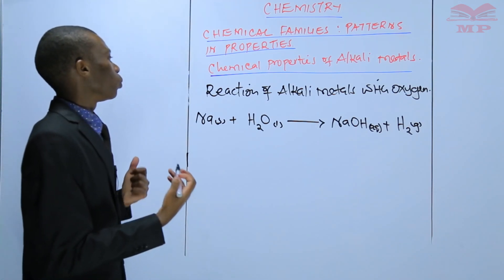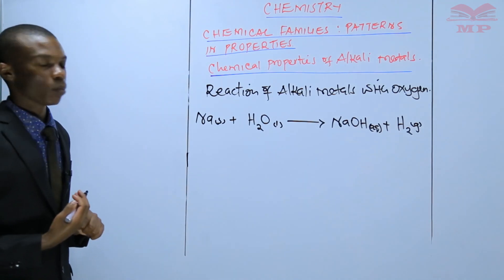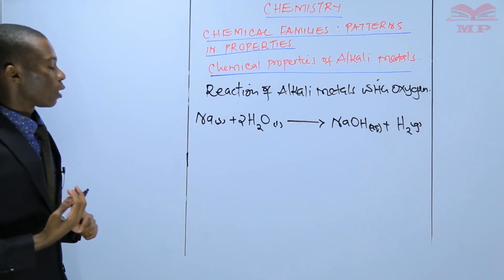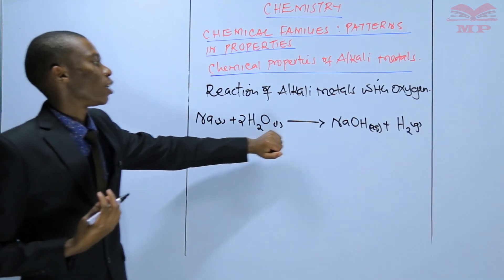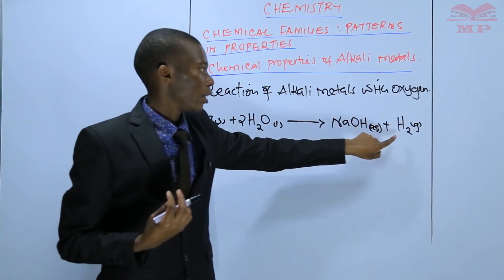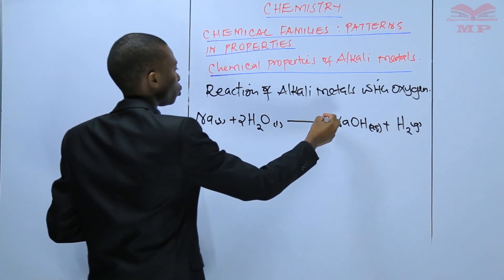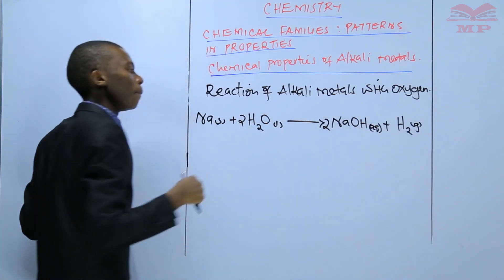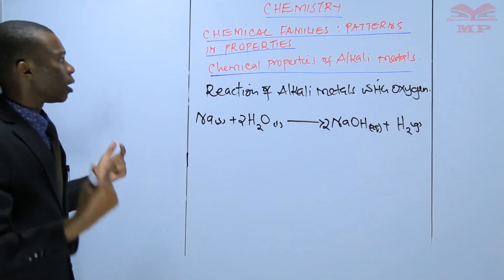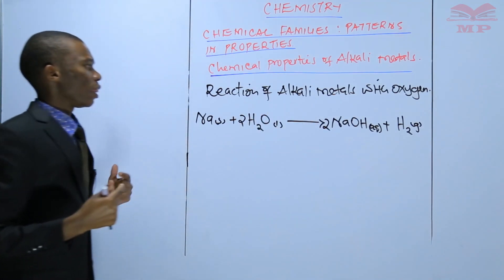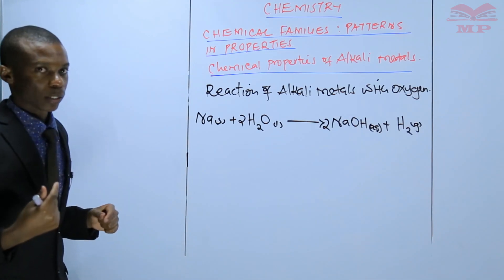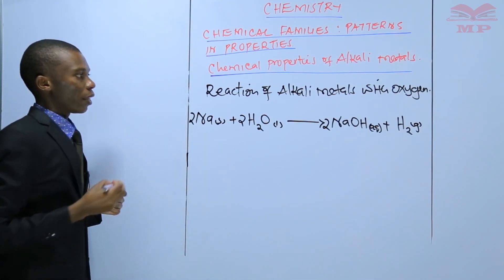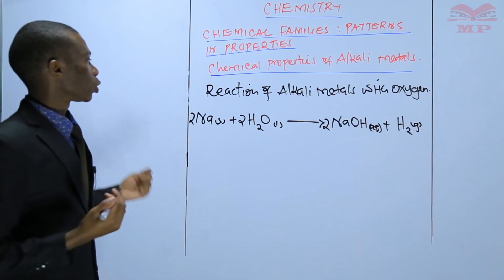To balance the hydrogen atoms, place a two just before water. Therefore the hydrogen atoms on the reactant side will be four, and on the product side we need a two as well, making the hydrogen atoms four — so the hydrogen atoms are balanced. But by placing two before sodium hydroxide, you have increased the number of sodium atoms on the product side, so you also need to increase them on the reactant side by putting a two before sodium. Therefore the balanced equation for sodium reacting with water is: 2Na(s) + 2H₂O(l) → 2NaOH(aq) + H₂(g).